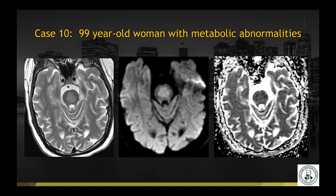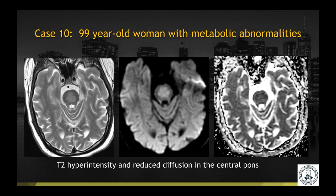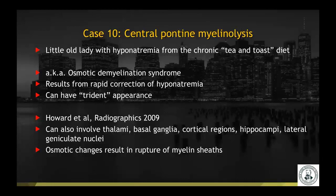Case number 10 is a 99-year-old woman with metabolic abnormalities. T2 hyperintensity and reduced diffusion is seen in the central pons. This was a case of central pontine myelinolysis, a classic presentation in a patient who had hyponatremia from a chronic diet. It is otherwise known as osmotic demyelination syndrome, and can result from rapid correction of hyponatremia. It typically has this classic trident appearance.